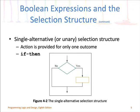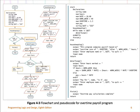Again, something we talked about in Chapter 3. If the result of that is yes or true, we would execute a block of code. If the answer is no, we would continue on with whatever came after the selection statement or the selection structure. Here we have a flowchart and pseudocode both for an overtime payroll program.